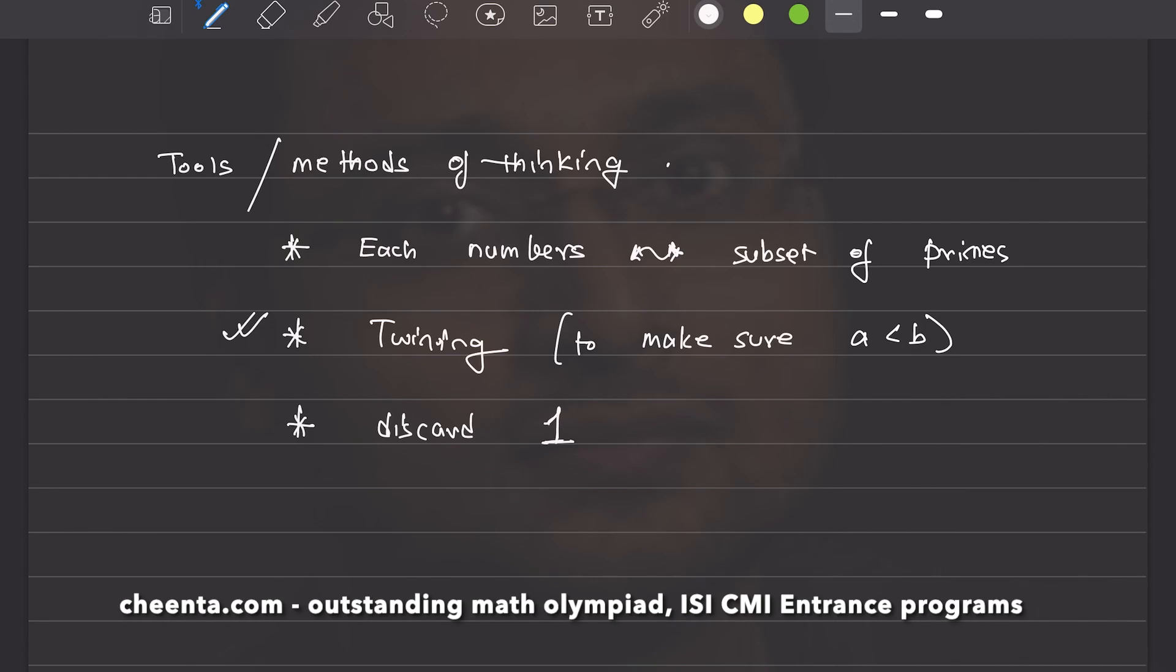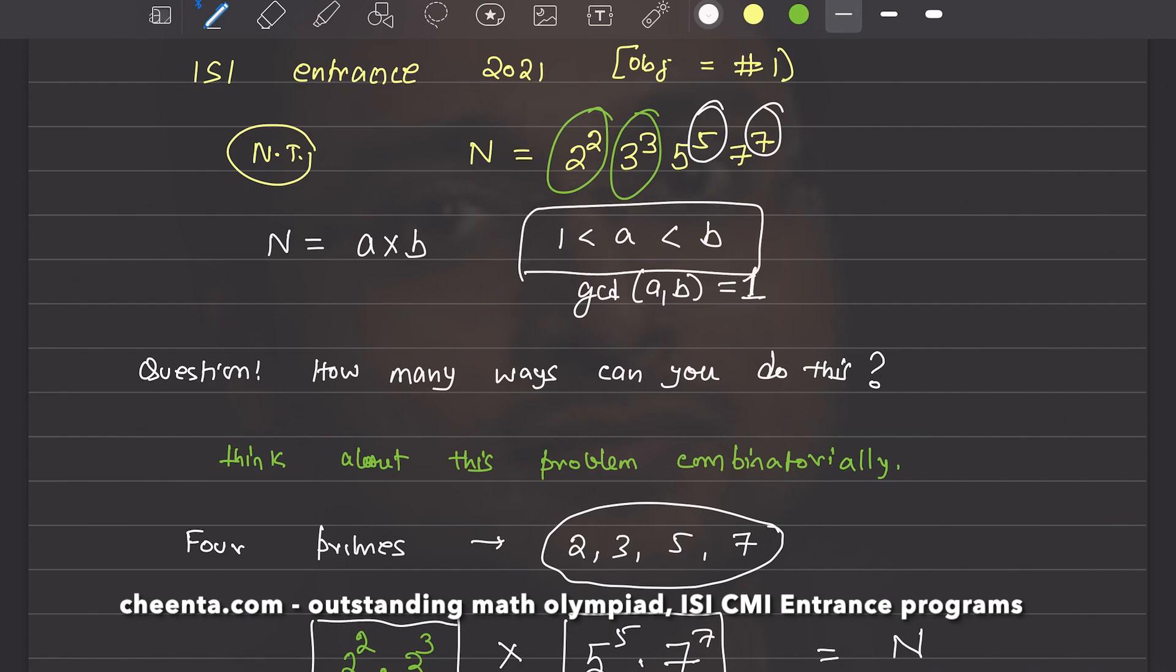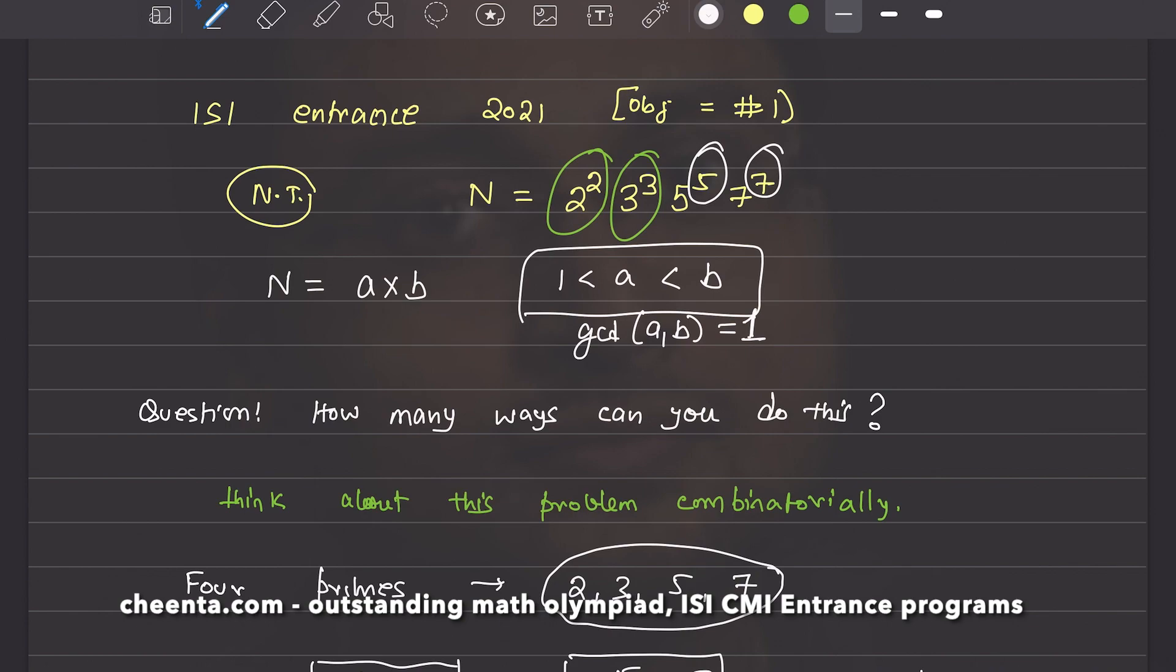You want one less than a less than b. So, you have to be careful and not take the subset of all the four numbers. Don't take the subset of all the four numbers. Because then, if all the four primes is in a, then b will become one. If a contains all the four primes, then b would become one and vice versa.